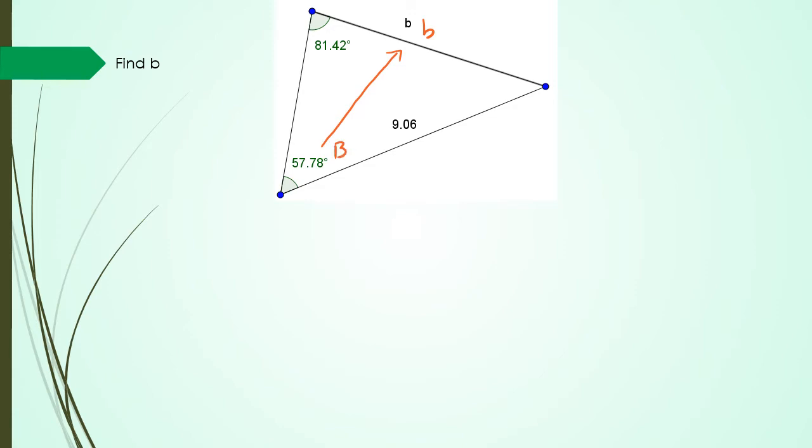If you want you can call it C or D whatever it doesn't matter but let's just stick with A. So angle 81.42 is A which means 9.06 is little a.